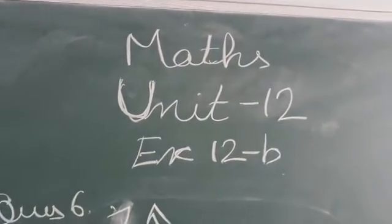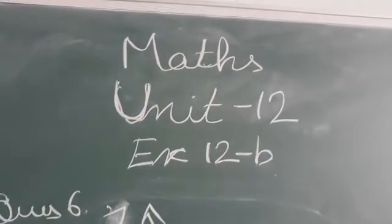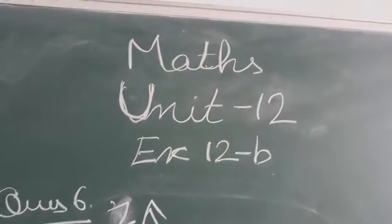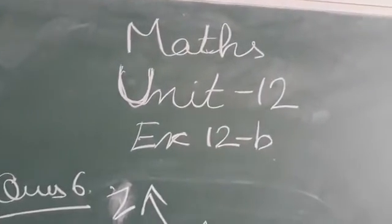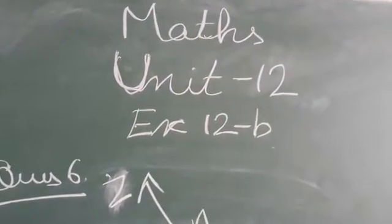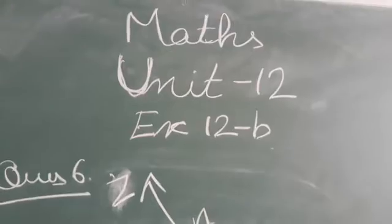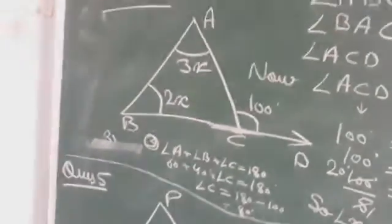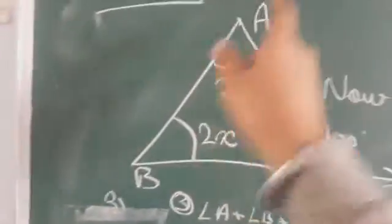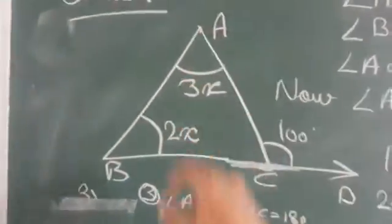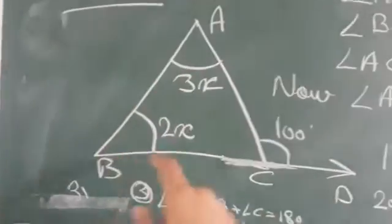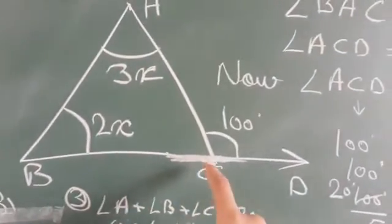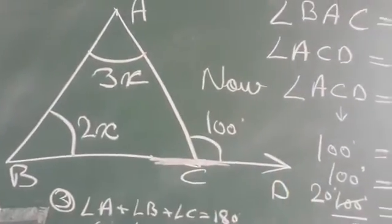Good morning students. Today we will do our next unit - 12th exercise, 12th week, coach number 4th. Let's check this. This is the figure in which triangle ABC is given and BC side is produced up to point D.